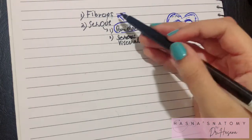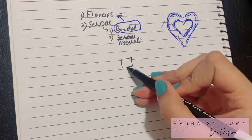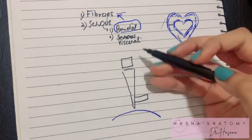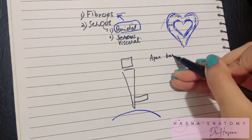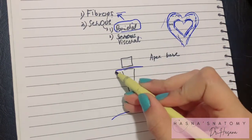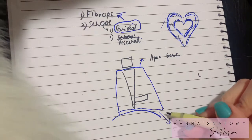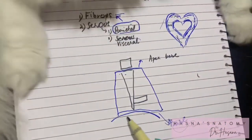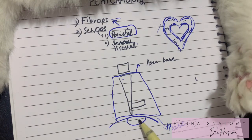Now let's talk more in depth about the fibrous pericardium and how it is located in your body. Here we have the manubrium, the sternum, and the diaphragm. The fibrous pericardium consists of an apex and a base. The apex is at the sternal angle, and the base is very closely attached — almost inseparably — to the central tendon of the diaphragm.